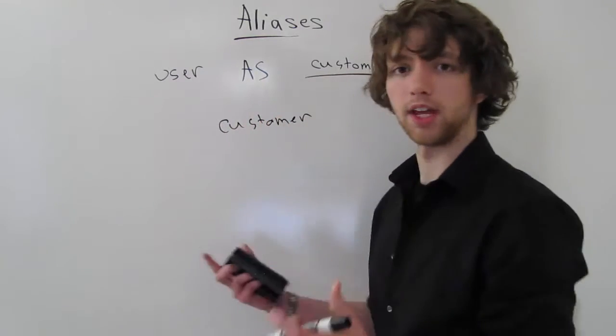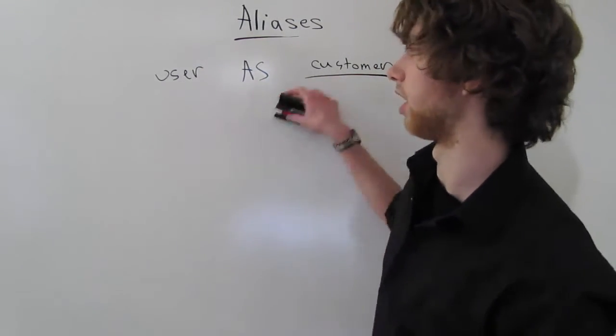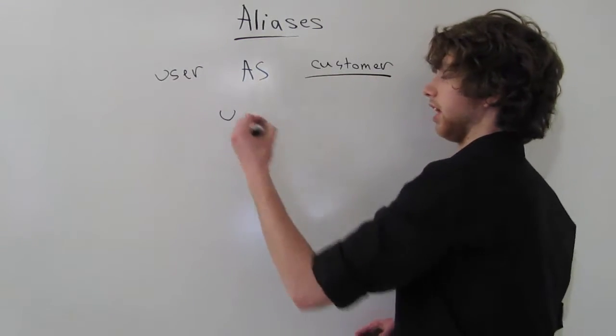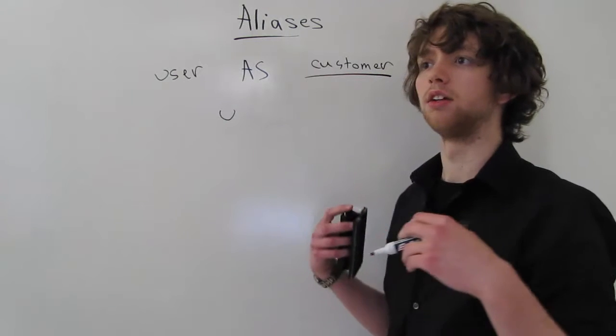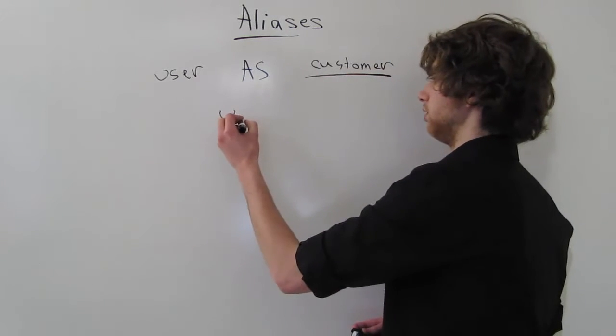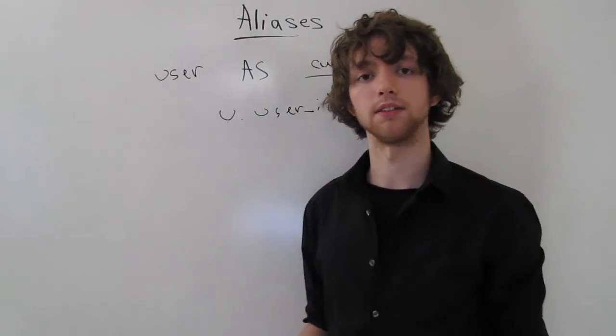And often, you won't take a short name and make it into something longer. You will do something like replace user with a U, and then instead of doing user.userid, you would be U.userid. That's an example of an alias.